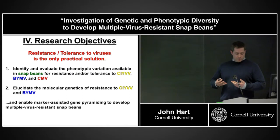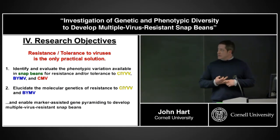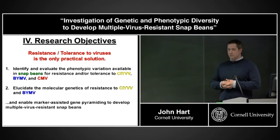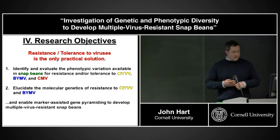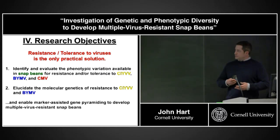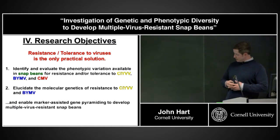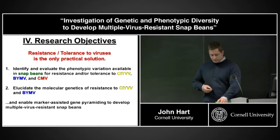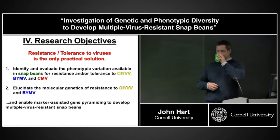That's what I formed my research objectives around. The first objective was to identify and evaluate the phenotypic variation available in snap beans for resistance and/or tolerance to these three viruses. The second objective was to elucidate the molecular genetics of resistance to some of these viruses and subsequently enable marker-assisted gene pyramiding to develop multiple virus-resistant snap beans.